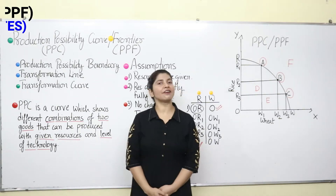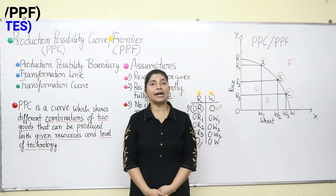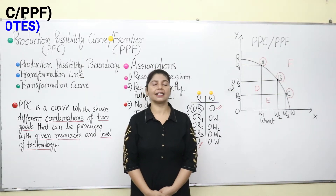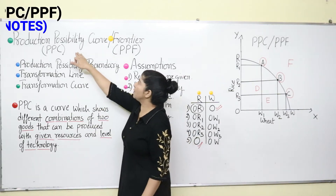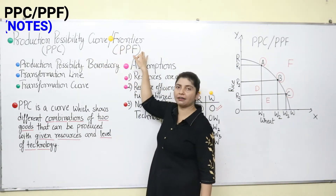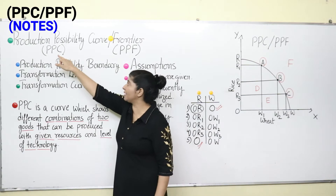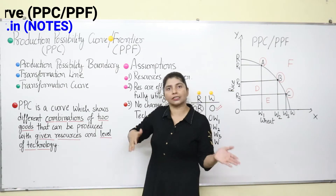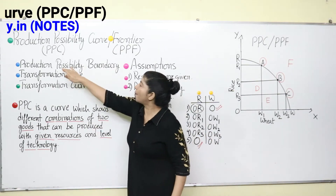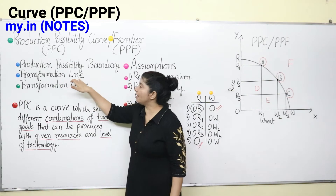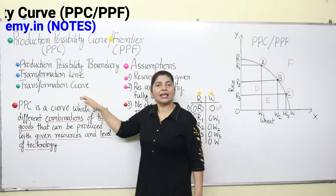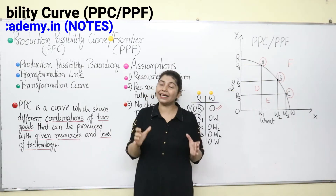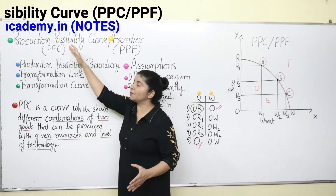Our topic for today is very important. Production Possibility Curve is asked in different board examinations continuously and you need to understand it really nicely. It is also known as Production Possibility Frontier, or PPC or PPF. Some other names are also used: Production Possibility Boundary, Transformation Line, or Transformation Curve. If any of these terms appear in your question paper, that means you are being asked about Production Possibility Curve.